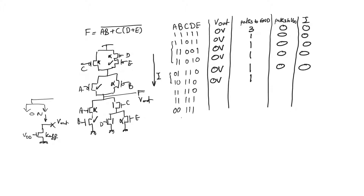For case 1,0,1,1,0 it is exactly the same situation except transistor B is cut off in the pull-down network instead of transistor A. For case 1,1,1,1,0, we find that we have two paths to ground: through transistors A and B, and through transistors C and D. In the pull-up network, transistors A and B are cut off, so there's no need to look further. We have two paths available to ground, zero paths available to VDD, zero current flowing, and the output is zero volts.